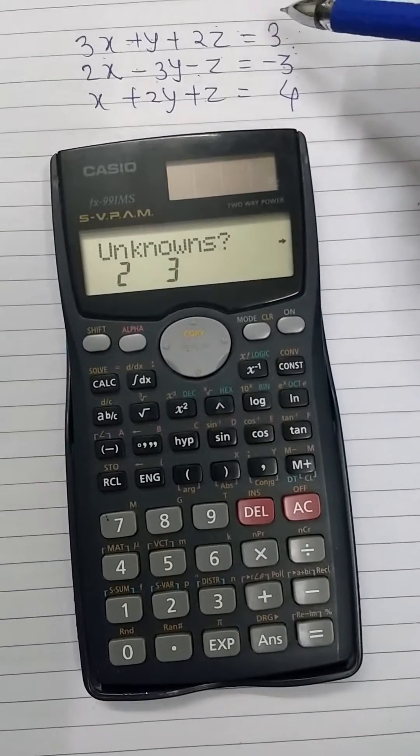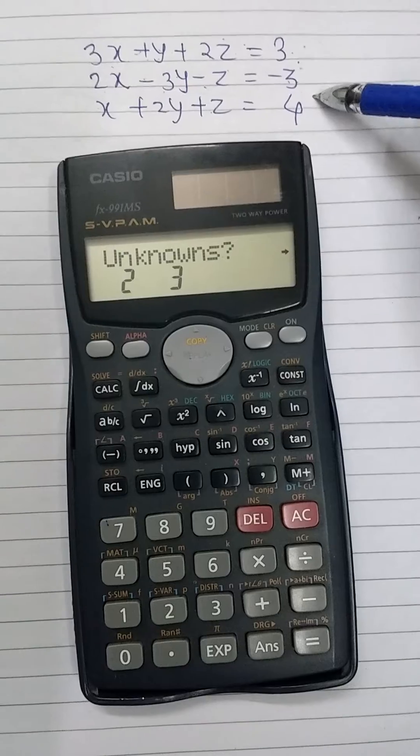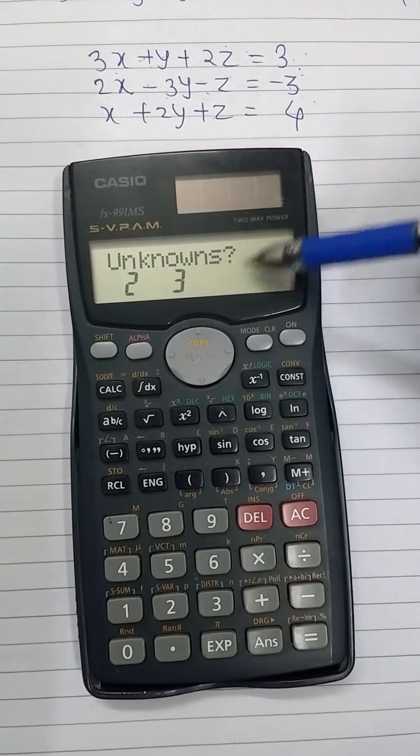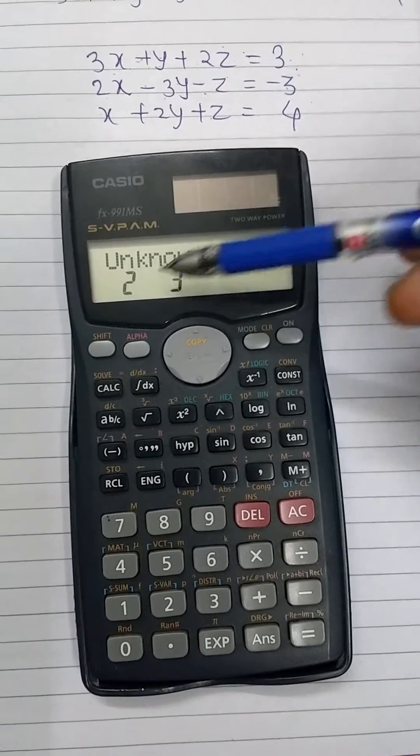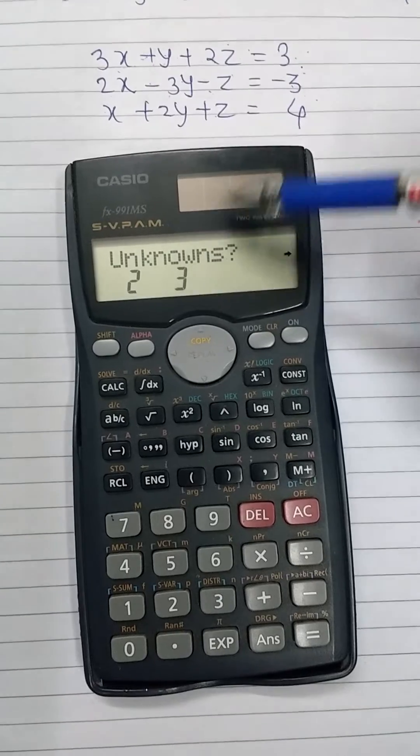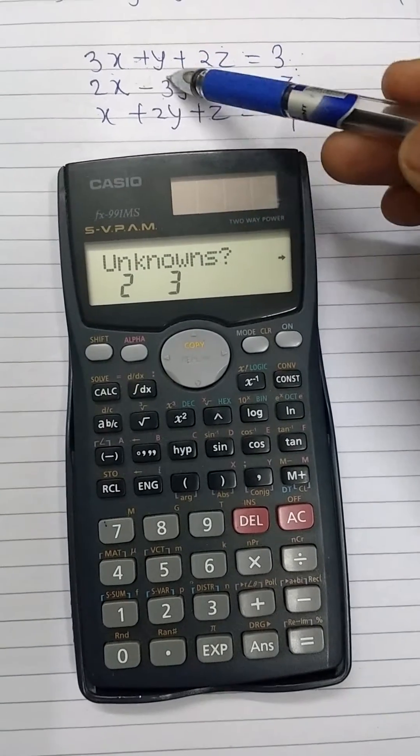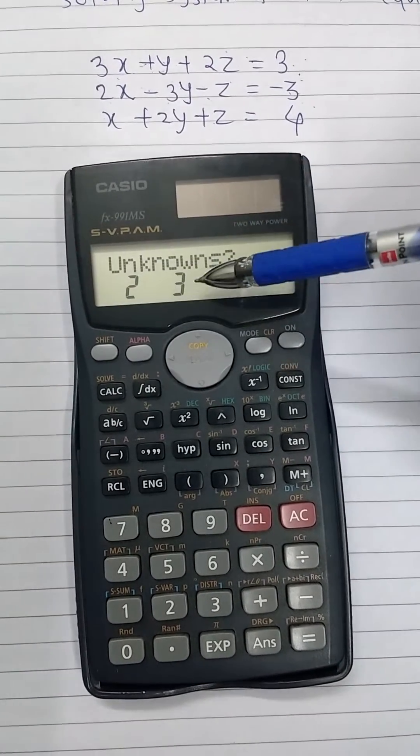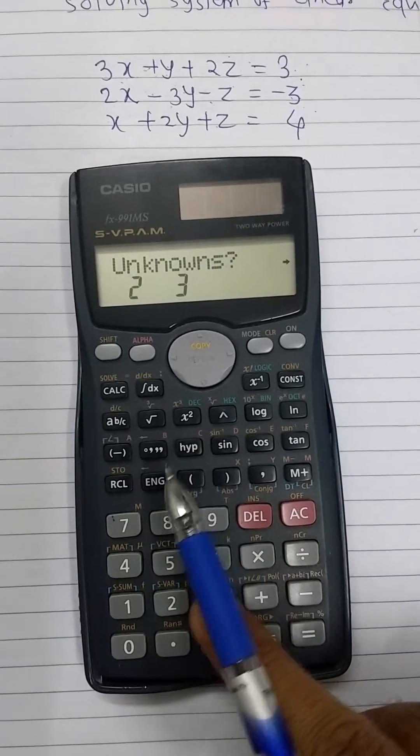See our system of linear equations. Here are 3 equations in 3 unknowns. Here on screen, we can see unknown question mark 2 or 3. The number of unknowns are x, y, and z. That is, the number of unknowns is 3. Therefore, I am choosing 3.